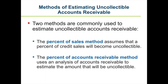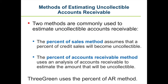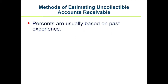The second method is the percent of accounts receivable method, which uses an analysis of accounts receivable to estimate the amount that will not be collected. 3Green uses the percent of accounts receivable method, and that's what we'll use in our problems. Percents are usually based on past experience — a business experiencing a 1% rate of uncollectible accounts can reasonably expect 1% of future accounts receivable will be uncollectible.